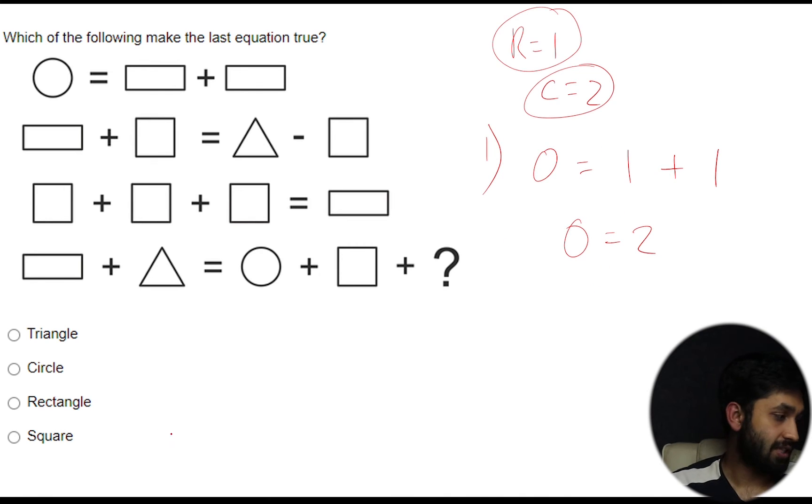So now we've got our answer of circle equals two and rectangle equals one but we're not there yet so let's continue. Let's try and work out what the other shapes equal. So let's think of which shape do we attack next.